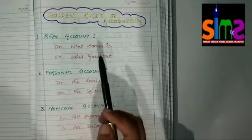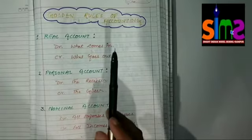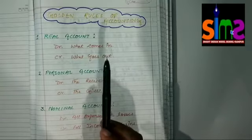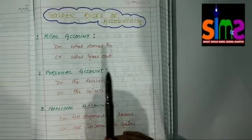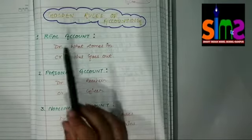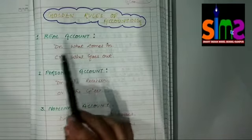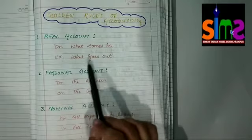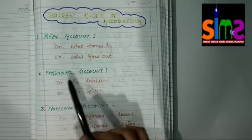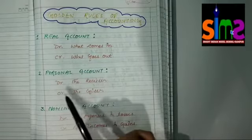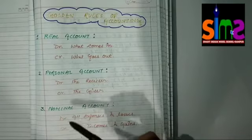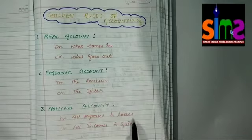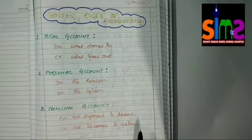According to the traditional approach, the rule of debit and credit is divided into three types of account. The rule of real account is debit what comes in, credit what goes out. The rule of personal account is debit the receiver, credit the giver. And the rule of nominal account is debit all expenses and losses and credit all incomes and gains.